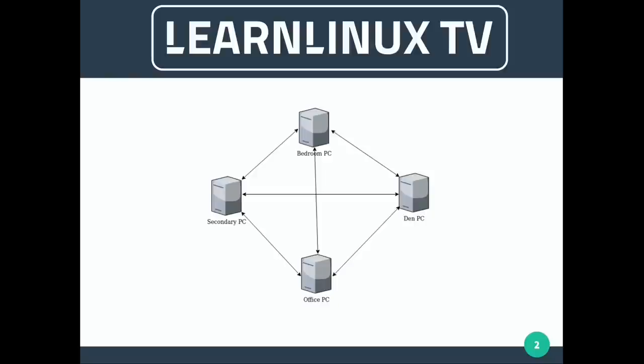What I like to do instead is have a central file server. Not everybody has a file server — you could use your main desktop as the file server; it doesn't actually have to be a real server. In this example we use the star topology: all PCs sync to the file server and none of them sync to each other. In my opinion this works best, and I've been running SyncThing this way for several years.